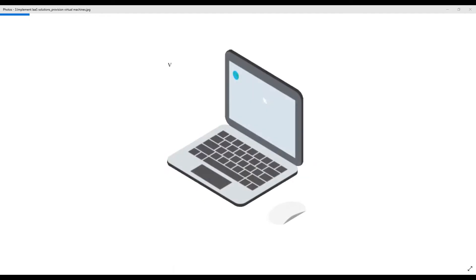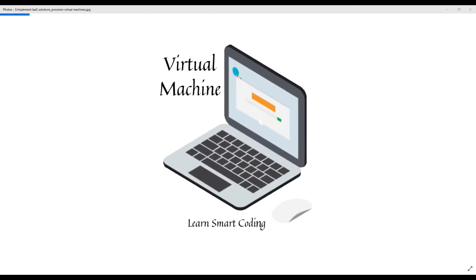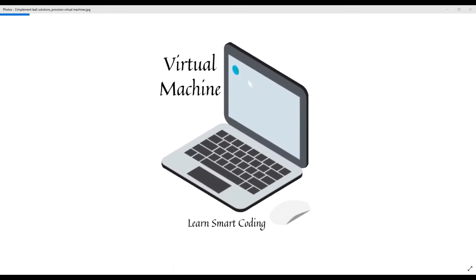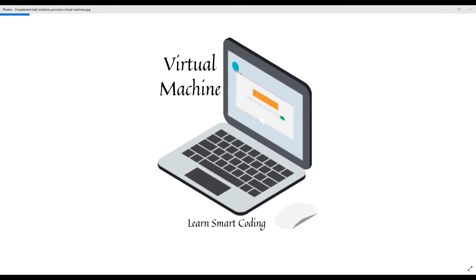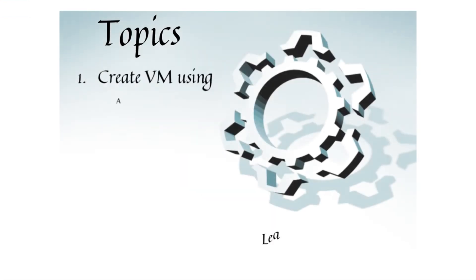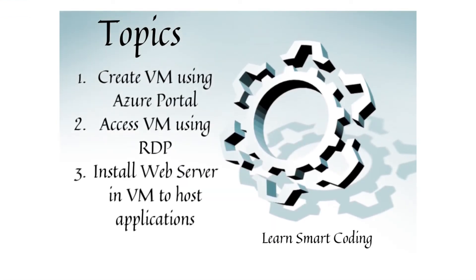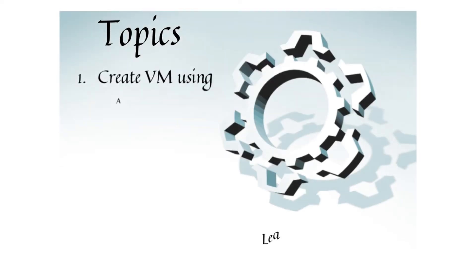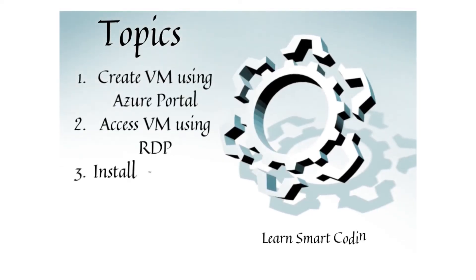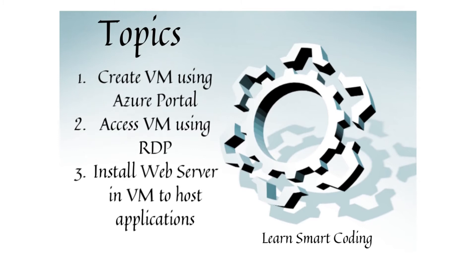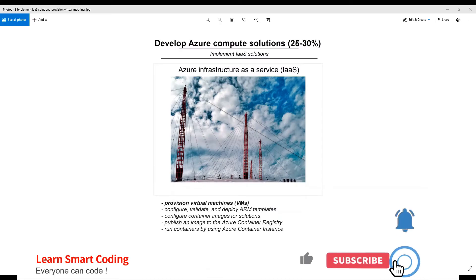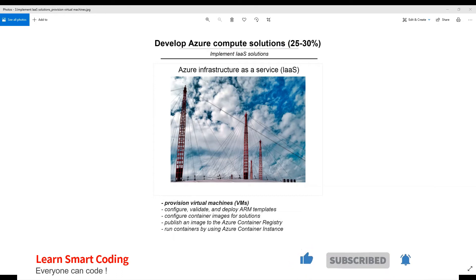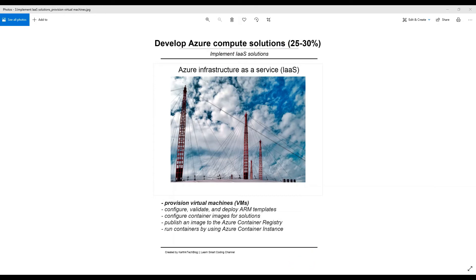Provisioning a virtual machine is part of Infrastructure as a Service, which is in short called IaaS. This is one of the services provided by Microsoft, and we can have our own virtual machines built by us and for our needs. Before we get into the real-time demo, let me explain at a higher level what IaaS and virtual machines are and their usage.